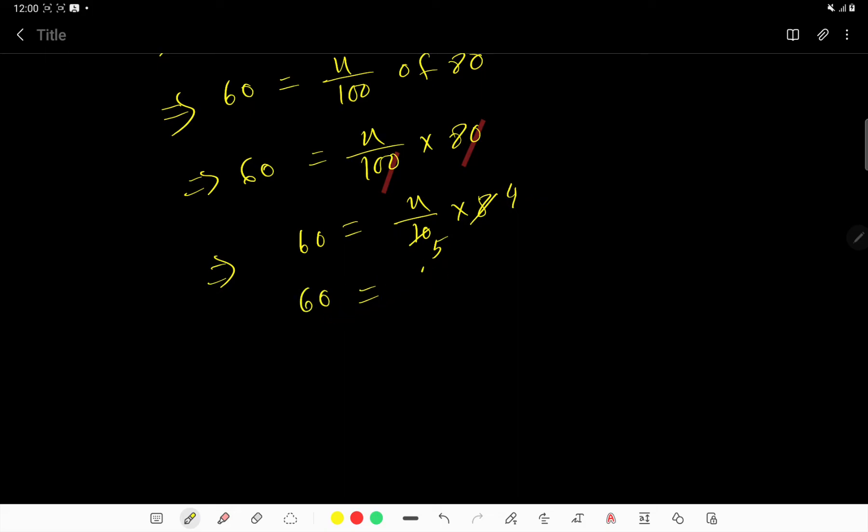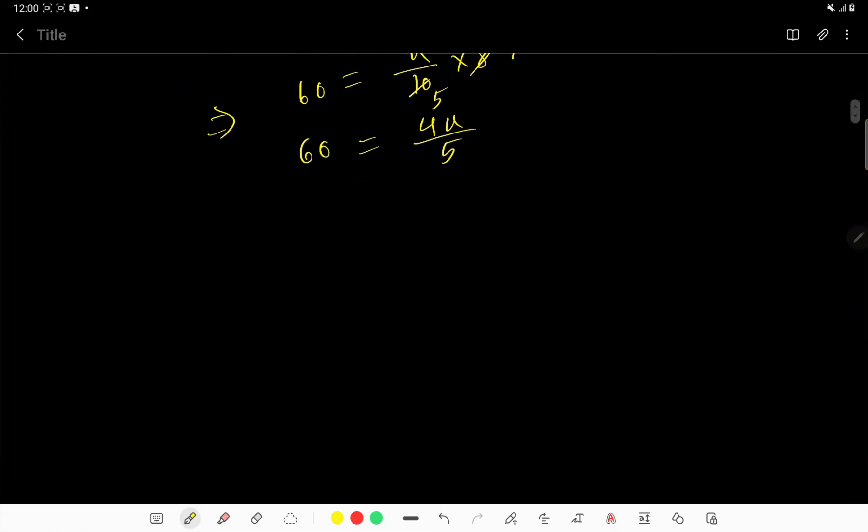If you divide both sides by 4, or if you multiply both sides by 1 over 4, the fours cancel each other. If you divide 60 by 2, you get 30, and if you divide 4 by 2, you get 2.